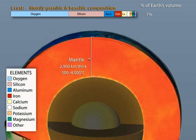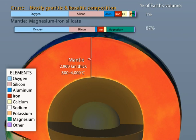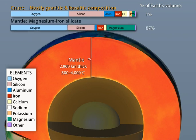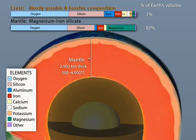Below the crust is the mantle, composed of the same elements but in different proportion, with increasing amounts of the heavier elements in the rock. The chemical composition of the 2,900 kilometer thick mantle varies little from top to bottom, but there are distinct physical variations due to temperature and pressure differences.